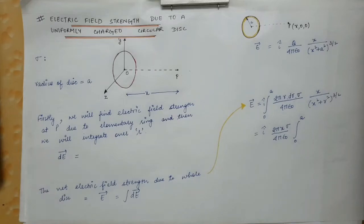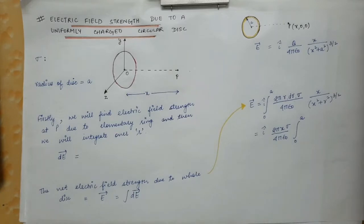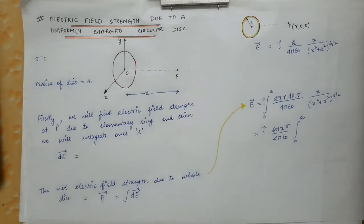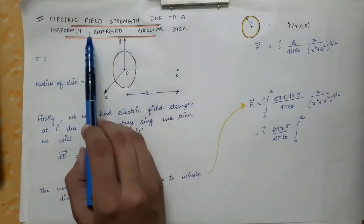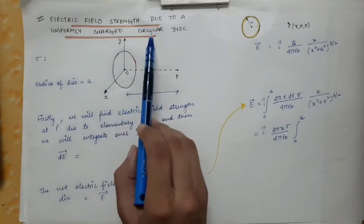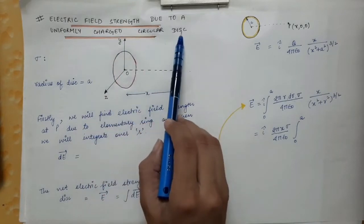In the previous lecture, we discussed the electric field strength due to a uniformly charged circular loop. In this lecture, we are going to find the expression of electric field strength due to a uniformly charged circular disk.